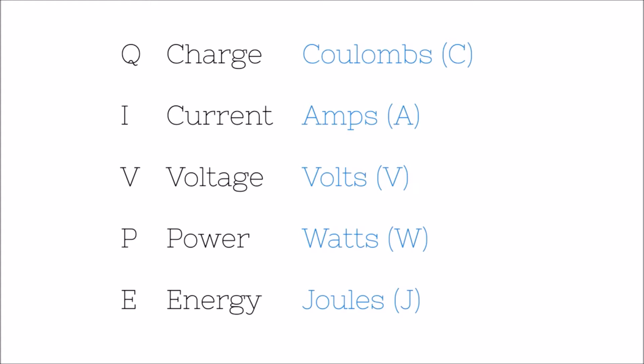Welcome to this first video in a series on the basics of electrical engineering. In this first video, we're going to have a look at these five quantities: charge, current, voltage, power, and energy. These five quantities are each represented in different equations by five symbols. For instance, the quantity of charge is given by the symbol Q, the symbol I for current, V for voltage, P for power, and E for energy.